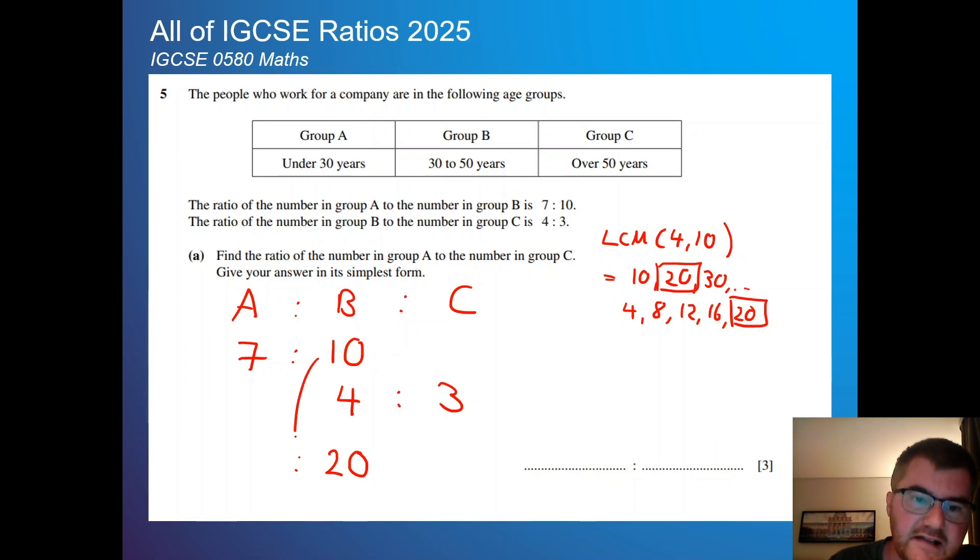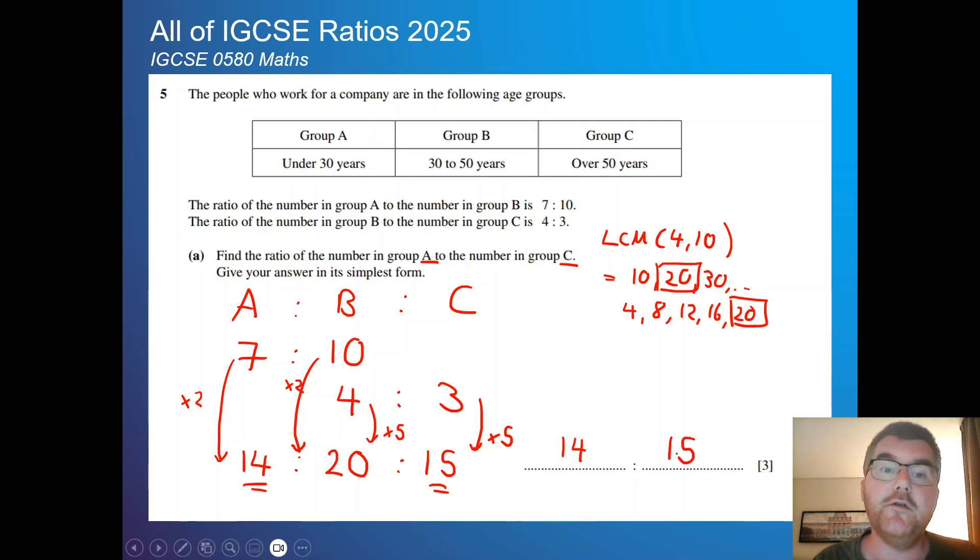So what I'm going to do is write 20 down here. And what do I do to 10 to get to 20? Well, I times by 2. So I do the same to the 7 times that by 2, that gives me 14. And what do I multiply 4 to give me 20? Well that's 5. So I do the same to the 3 here, and that gives me then 15. It's looking for the ratio of group A to group C. Now we've got the B in common, we can just read off the 14 to 15.